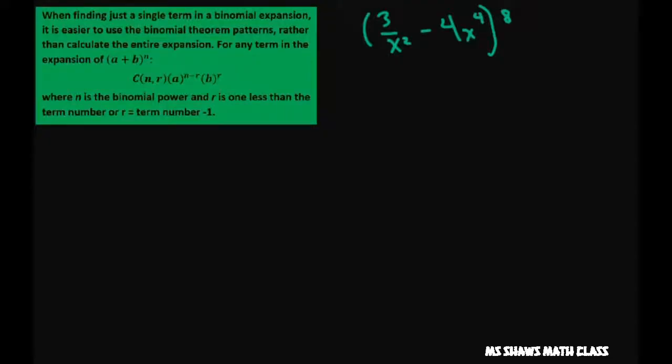So we'll get started and usually when just finding a single term we use this formula here and that's what we're going to do. So the C n comma r is really like n choose r, or the way we're going to write it is n choose r like that.